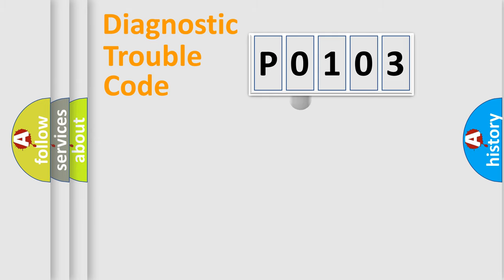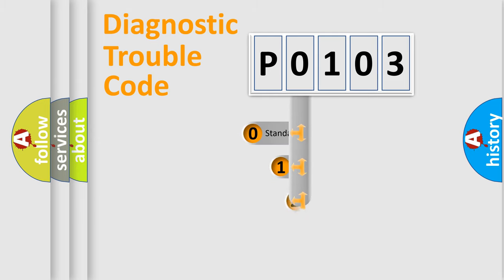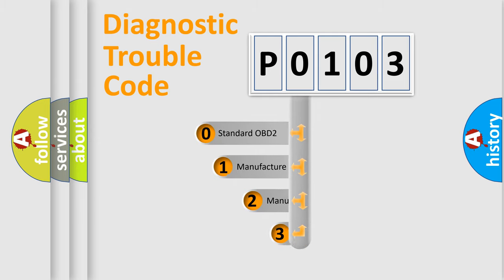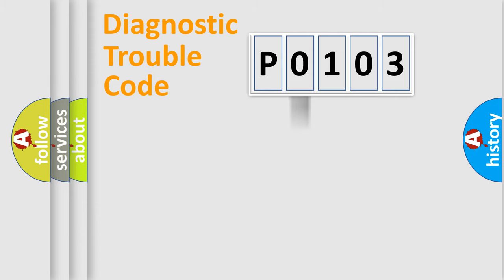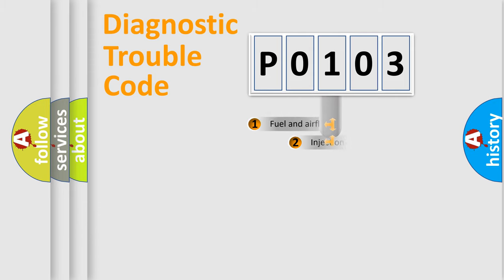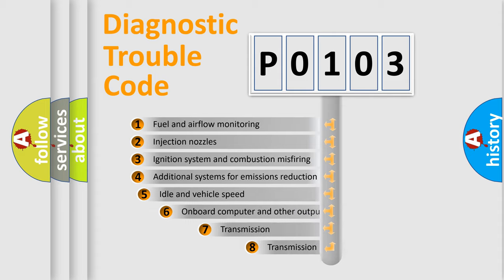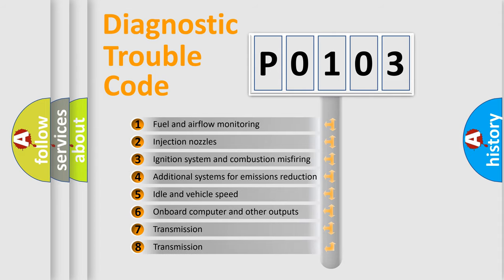This distribution is defined in the first character of the code. If the second character is expressed as zero, it is a standardized error. In the case of numbers 1, 2, or 3, it is a more manufacturer-specific expression of the car's error. The third character specifies a subset of errors.